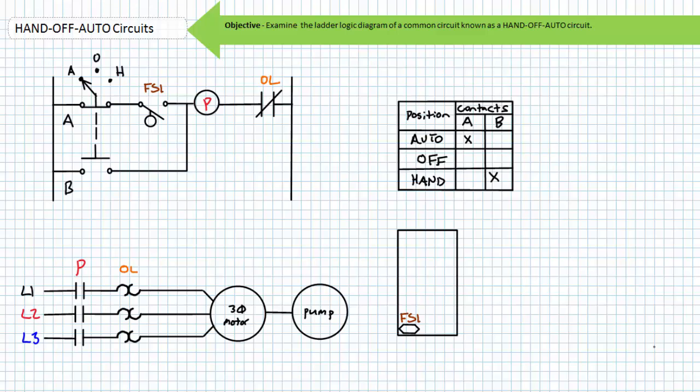Our objective is to take a brief look at a common industrial application of two-wire control circuits known as a hand-off-auto circuit. We'll discuss the devices that make up a hand-off-auto circuit and how they govern the function of the different modes.